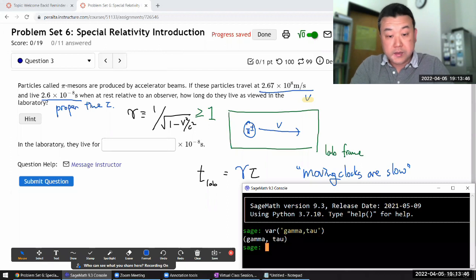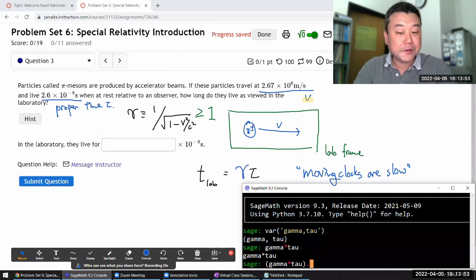So my lab time would be gamma times tau. That's the symbolic form. Now I need to plug in some numbers. This is a substitution syntax that's really fun to use. My lifetime in the proper rest frame is 2.6 times 10 to the minus 8 seconds.